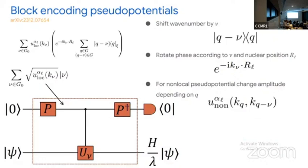There are two layers of things needing functional evaluation for the block encoding. We have a prepare giving weights over ν, and another step giving weights dependent on Q. In the algorithm, we try to make this simpler and bundle most of the complexity of preparing these weights into the part with the non-local pseudopotential.